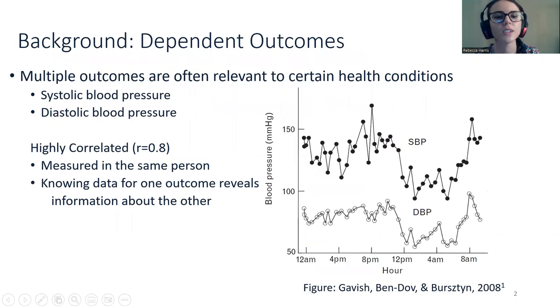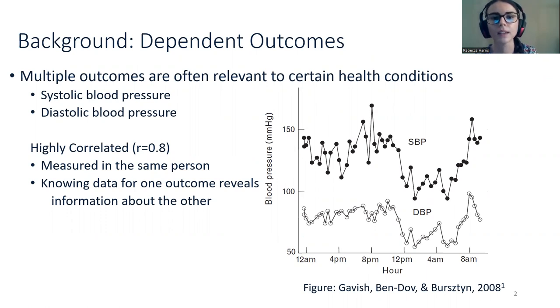In studies pertaining to cardiovascular health, systolic and diastolic blood pressure are key outcomes of interest and are both usually reported in primary studies, such as randomized trials and cohort studies.